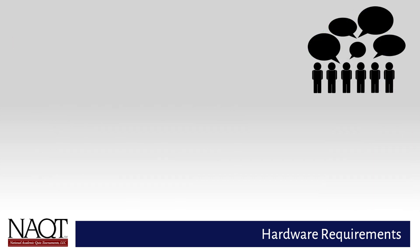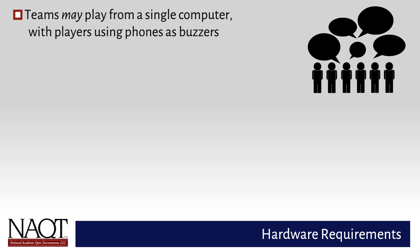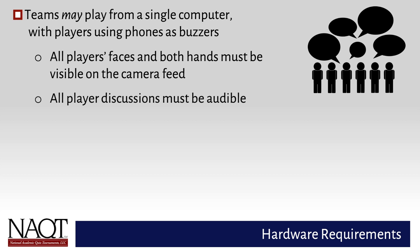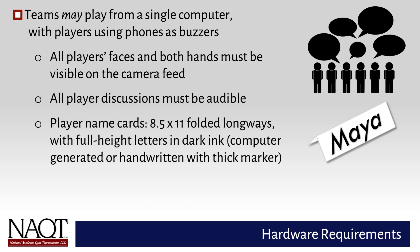Although this is not NAQT's preferred arrangement, teams are permitted to play from a single location, with all players sharing one computer. All players' faces and both hands must be visible on the camera feed, and all player discussions must be audible. Players must have name cards consisting of an 8.5x11 sheet of paper folded along its length as a tent, with large, dark ink letters that extend the full height of the folded sheet. Computer-generated and handwritten lettering with thick marker are both acceptable. These name cards must be clearly visible on camera.